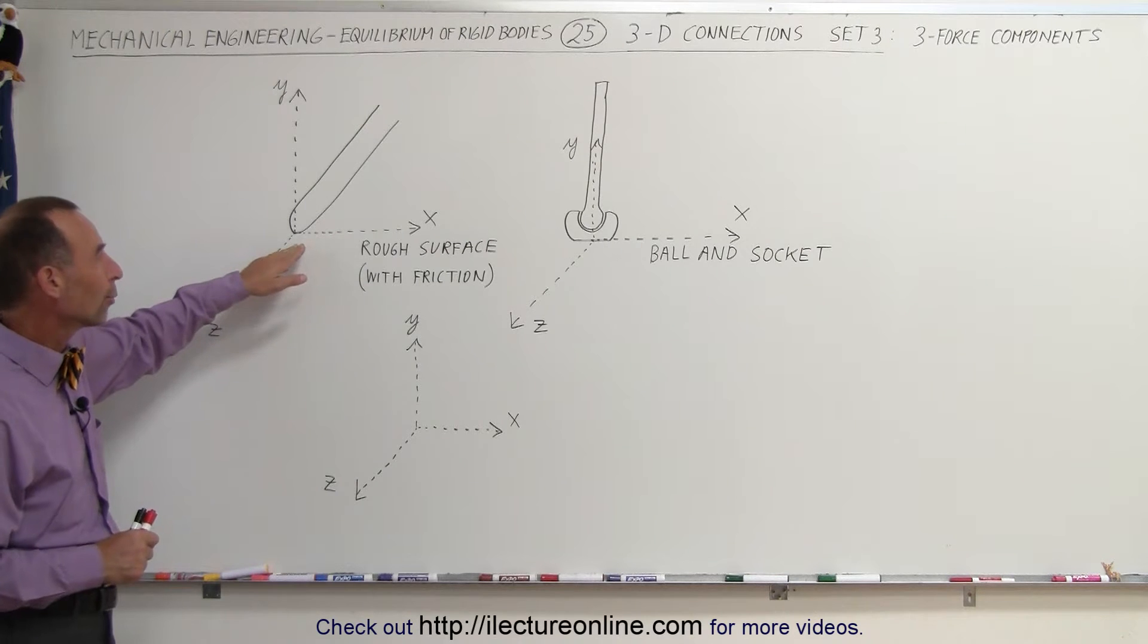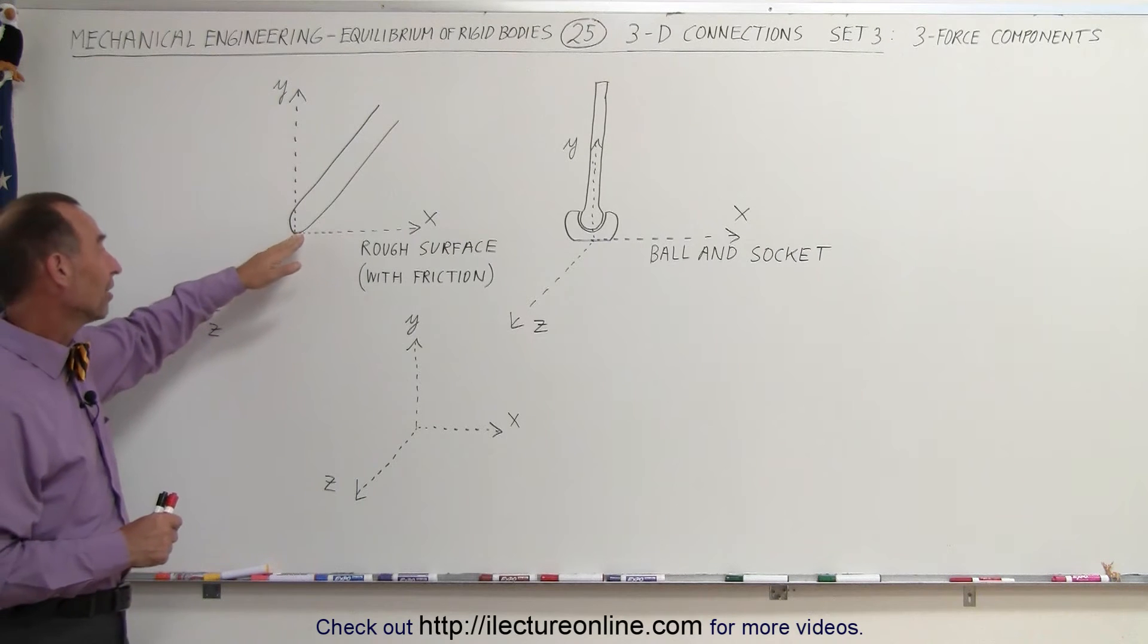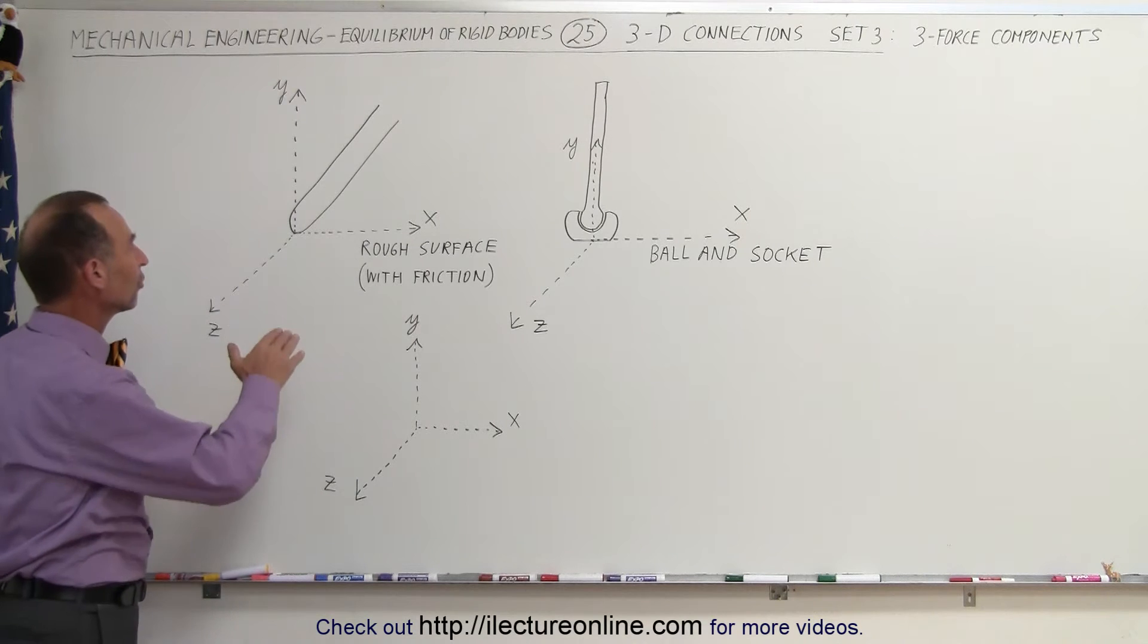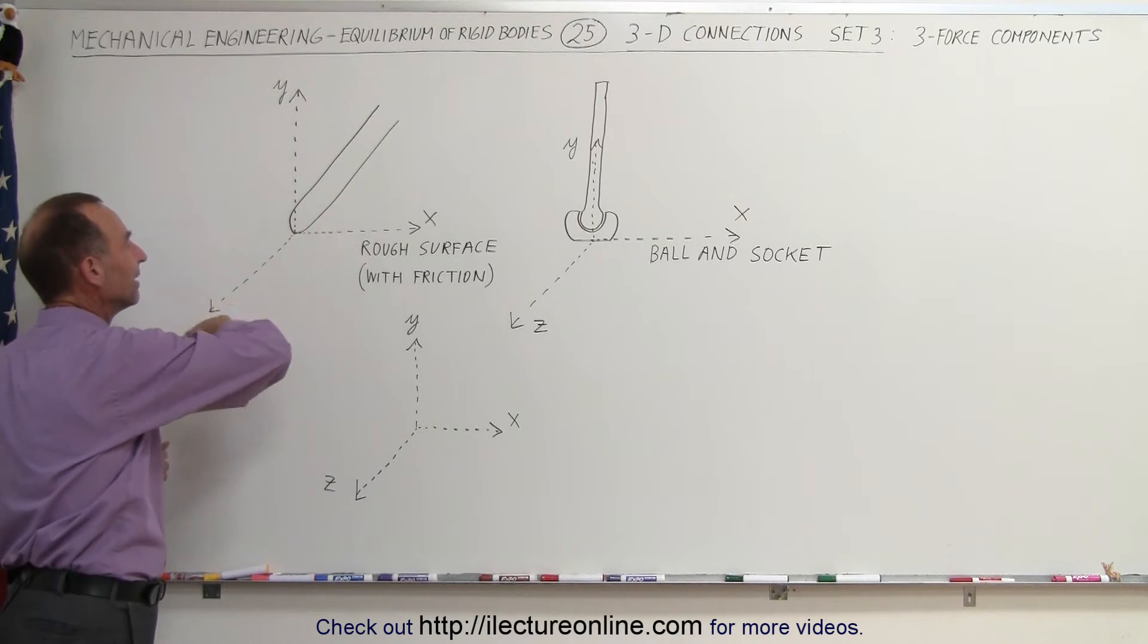We have an object resting on a rough surface. That object is allowed to travel in any direction, but because of the friction, there's potential force in the X and in the Z direction.